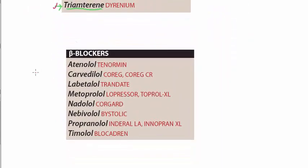Then are the beta blockers, and we know that the beta blockers end in -olol. So these are the -olol drugs. Like beta blockers: atenolol, then we have carvedilol, then we have labetalol — placing a star here, this is both alpha and beta blocker — and then metoprolol, nadolol, nebivolol, propranolol, and timolol. These are the beta blockers used to treat hypertension.